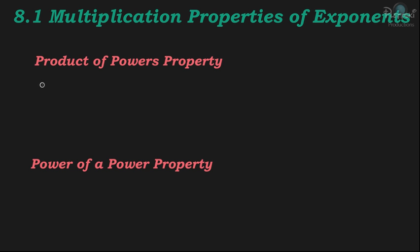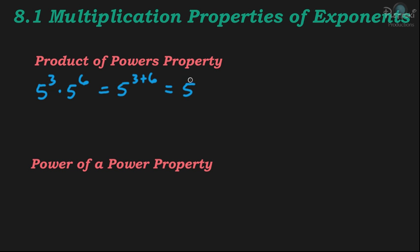For this first property, the product of powers property, let's start with 5 to the 3rd power times 5 to the 6th power. What the property told us to do was add the exponents. So we write 5 to the 3rd power plus 6. Since 3 plus 6 is 9, we get 5 to the 9th power.